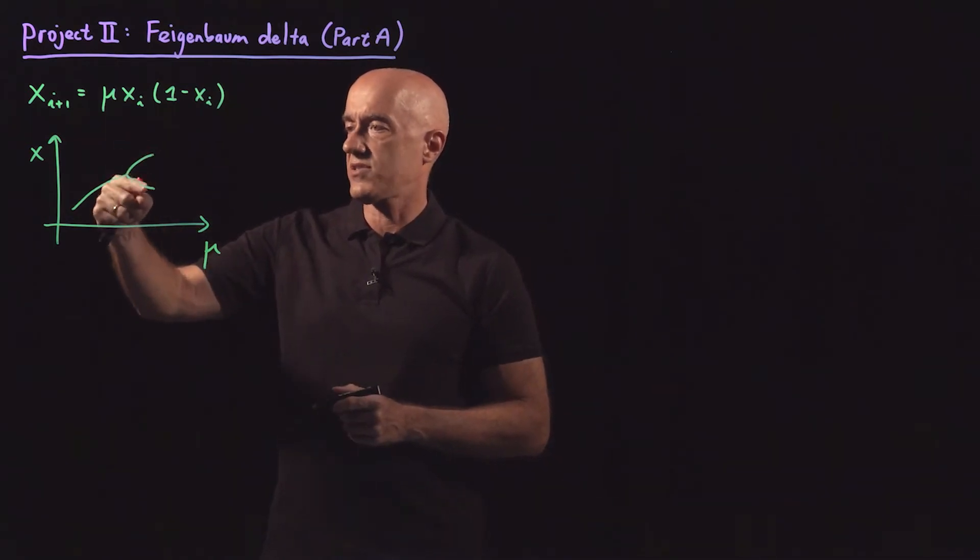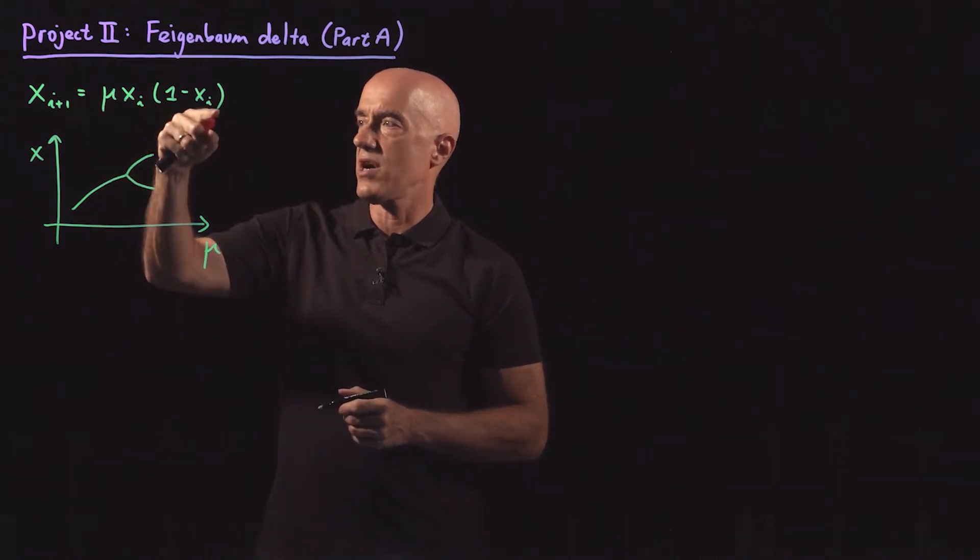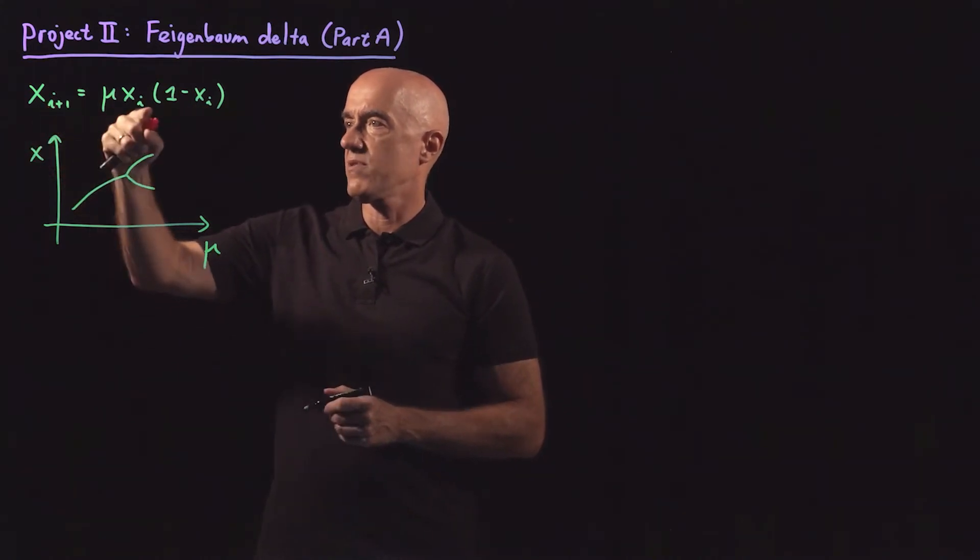So let's say x naught, x1, x naught, x1. So when you plug in x naught here, you get x1. When you plug in x1, you get x naught.